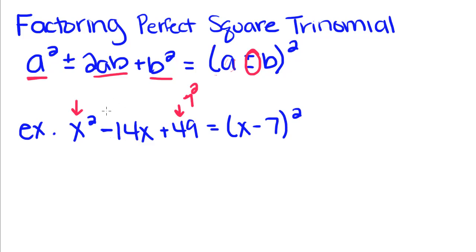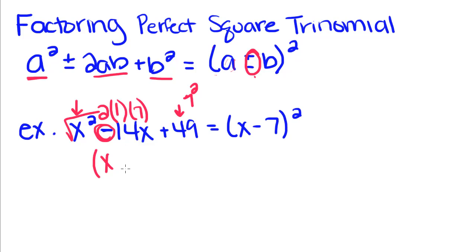We also need to confirm that the middle term can be written as 2ab, where a is 1 and b is 7. Well, 2 times 7 is 14. So that means when we write our perfect square, we take a — which is the square root of x — and then since this is a negative 14x, it's going to be minus b, which is 7, squared.